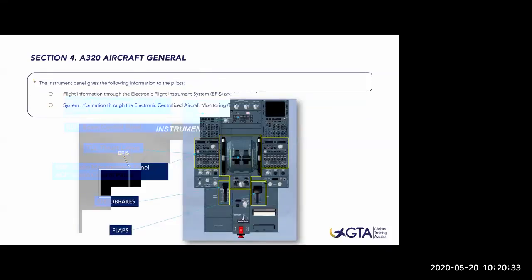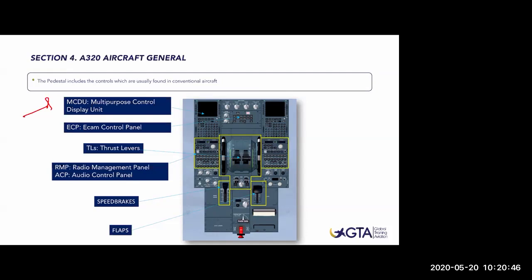This is the pedestal. We start from the MCDUs - Multi-purpose Control Display Unit - which everybody knows. Then we have the ECP, the ECAM Control Panel, which we use to get information from the ECAM. For example, pressing bleed will show the bleed status on the lower system display screen. We also have the thrust levers to set power, and the radio panels divided in two parts - the RMP, Radio Management Panel, and the ACP, Audio Control Panel.